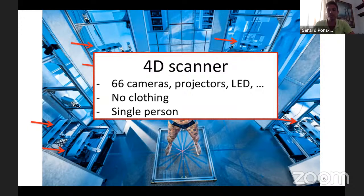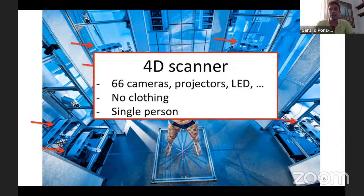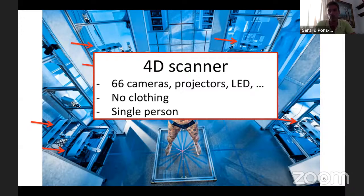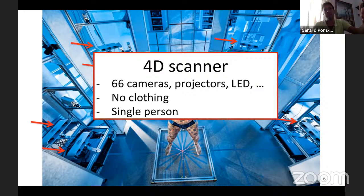We captured lots of people in different poses and shapes and learned the model from that. This was a very necessary step and produced models that are widely used in the community. But the problem is that it's difficult to scale — in particular to the many different appearances of clothing, or to model human-human interaction. It's difficult to capture all of these in a 4D scanner, so we need other solutions. I see the 4D scanner approach as the first step toward those other solutions.